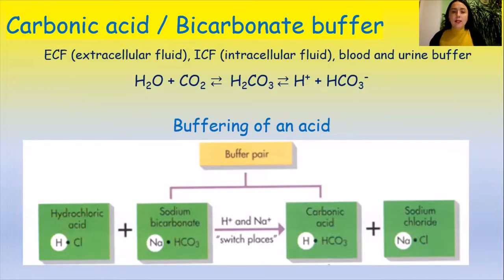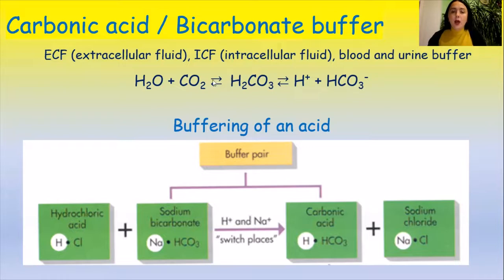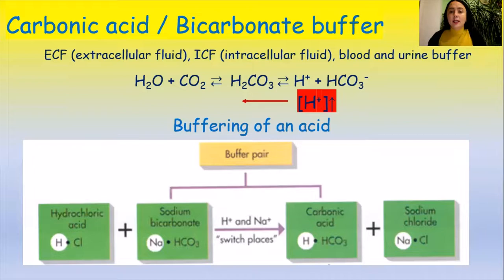Let's find out how the bicarbonate buffer works. Carbon dioxide is constantly produced in the human body as a result of metabolic processes. It reacts with water molecules forming H₂CO₃, which dissociates into H+ and HCO₃⁻. All these particles are in equilibrium. If the concentration of H+ ions increases, the equilibrium shifts to the left side, favoring the backward reaction, and their concentration decreases.